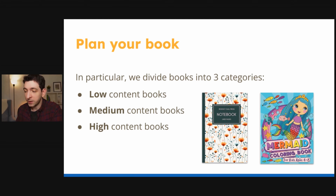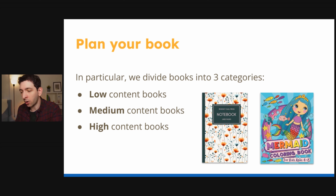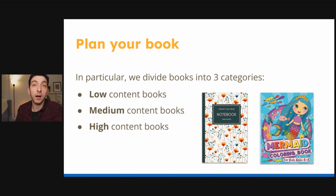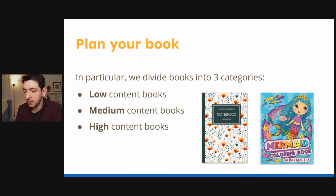Now let's start talking about the planning phase. The very first thing you need to know is what types of books you can publish for a profit. We divide books into three main categories: low content books, medium content books, and high content books. Low content books have almost no content and repeated pages — like a logbook, a journal, or a planner. Medium content books have a bit more content, like a coloring book, puzzle books, or an activity book. High content books are traditional books made mainly of text, divided into non-fiction and fiction.